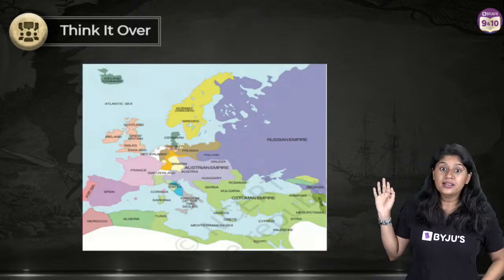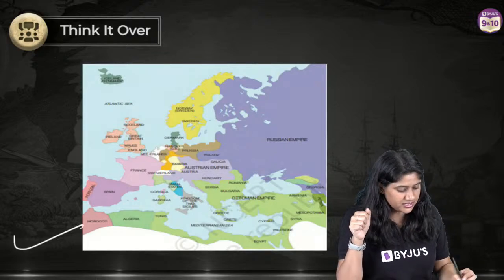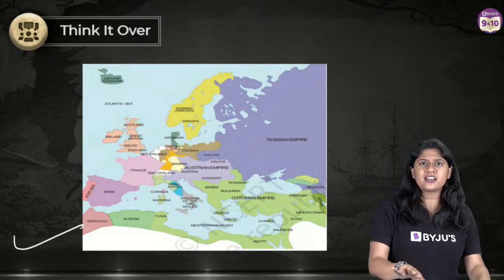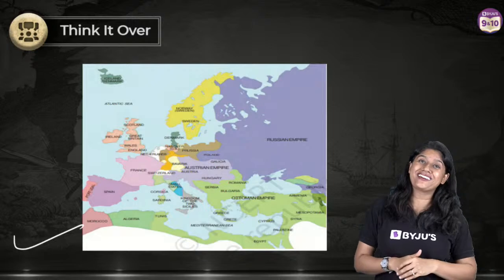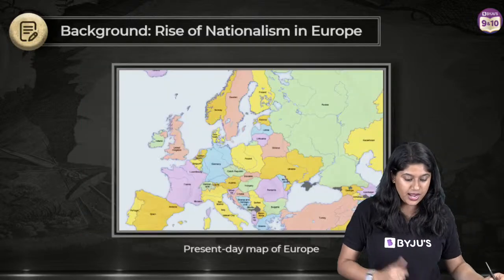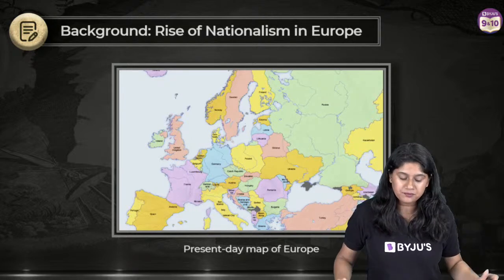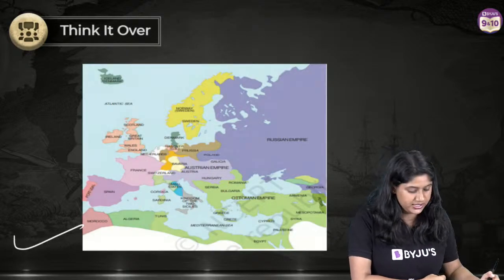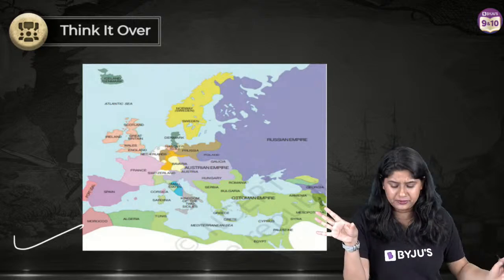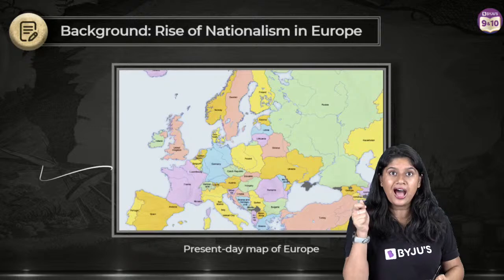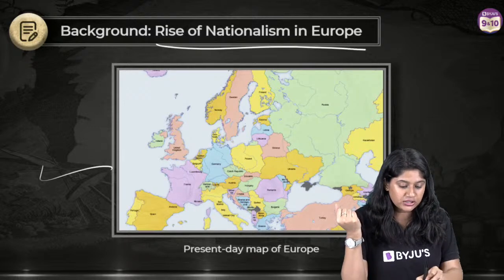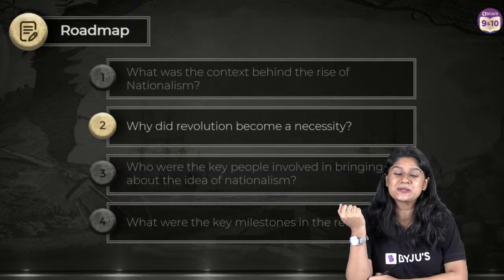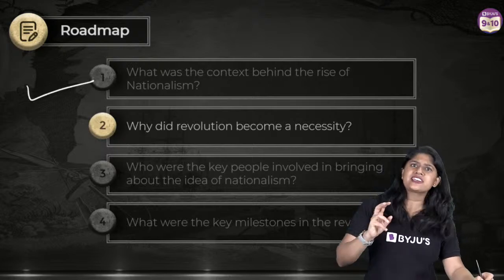Let's look at this map in your textbook. We can see so many boundaries and so many countries. Now compare this with another map — we don't have as many countries left. Initially there were way more — a kind of patchwork, scattered. But now things have changed. We will be understanding the rise of nationalism in Europe. With this we are done with the first part: what is nationalism and what was the context behind it.